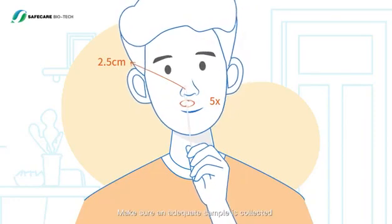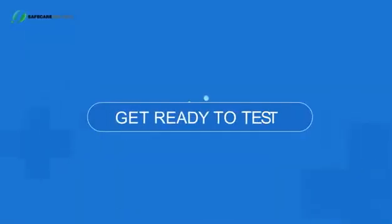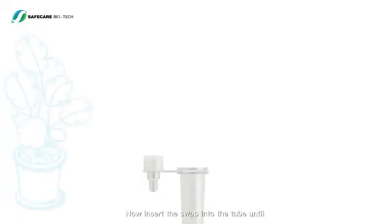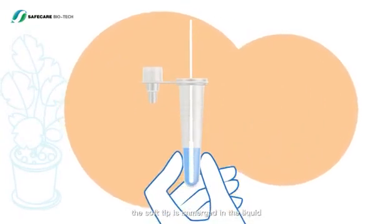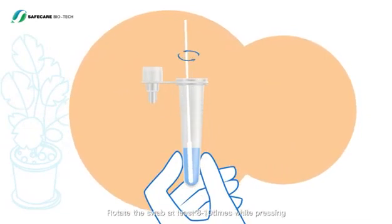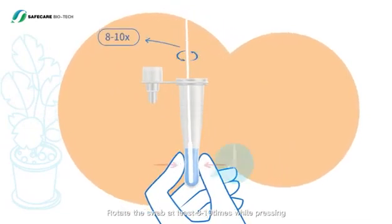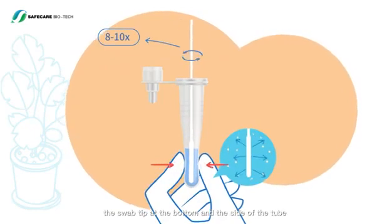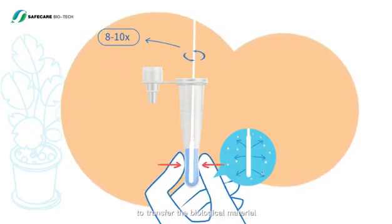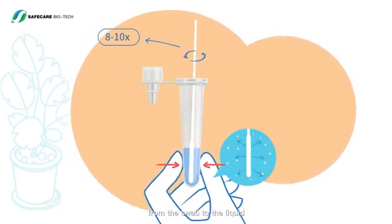Get ready to test now. Insert the swab into the tube until the soft tip is immersed in the liquid. Rotate the swab at least eight to ten times while pressing the swab tip at the bottom and the side of the tube to transfer the biological material from the swab to the liquid.